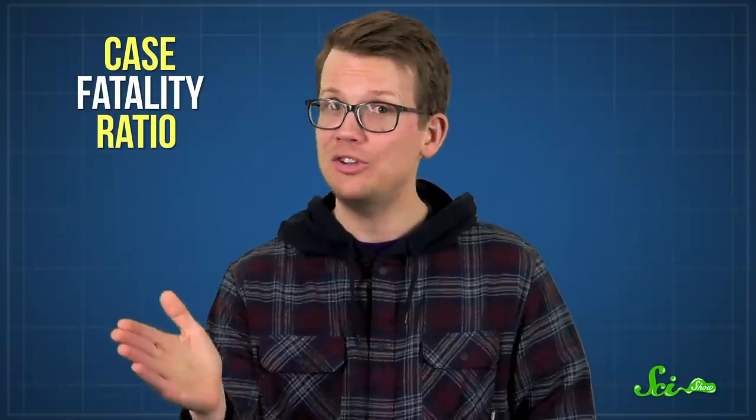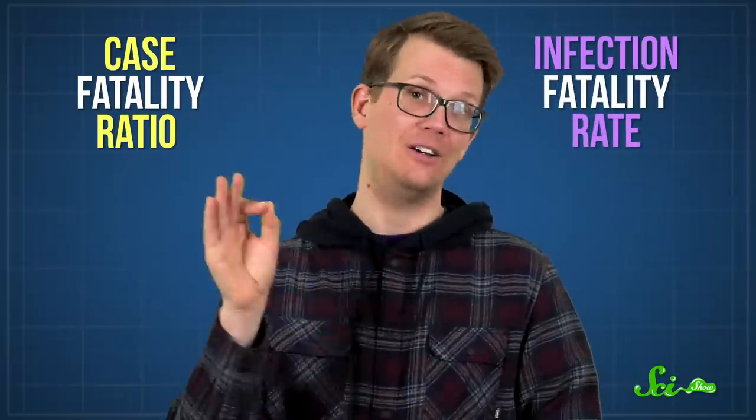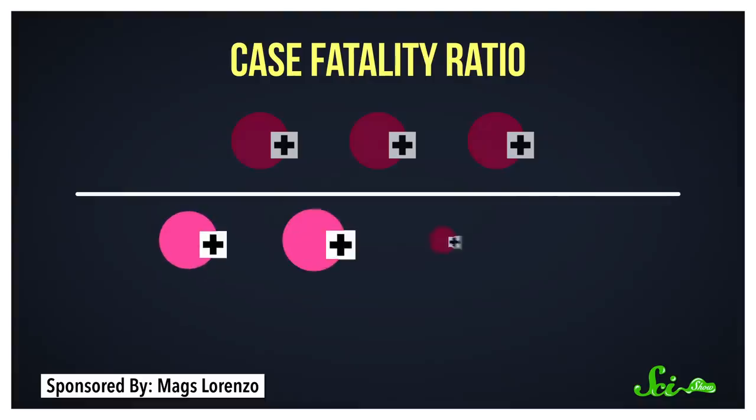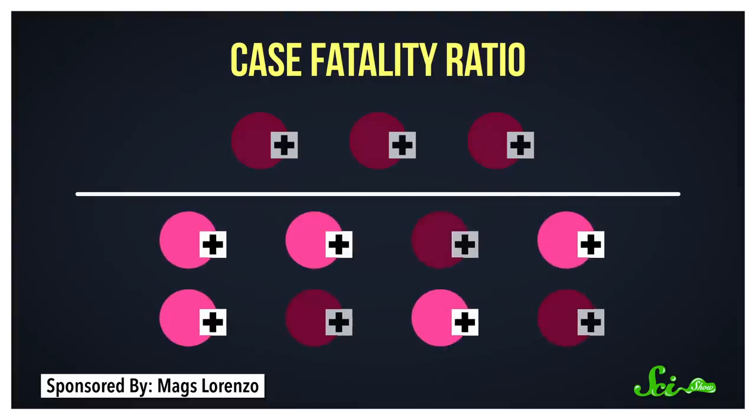First, one reason the fatality rate may be dropping is that we just may have more data. There are two kinds of fatality rates experts talk about when it comes to pandemics: the case fatality ratio and the infection fatality rate. The case fatality ratio is the number of people who were diagnosed with COVID-19 and eventually died from it, divided by the total number of people diagnosed with the disease. We've been tracking this number almost since the very beginning of the pandemic because it's pretty easy to track based on diagnoses.